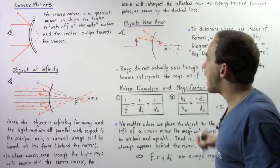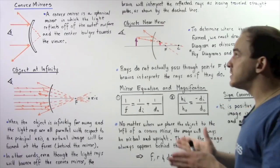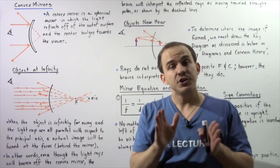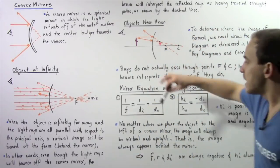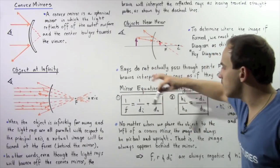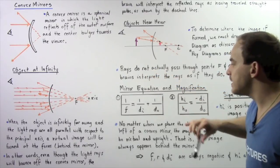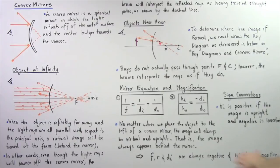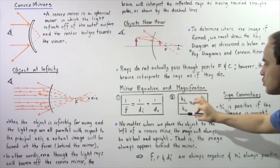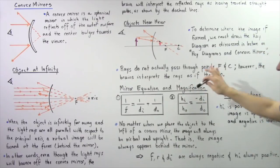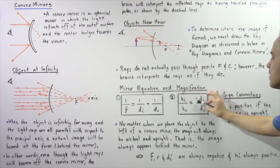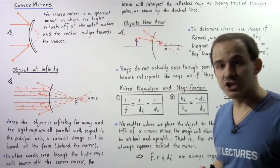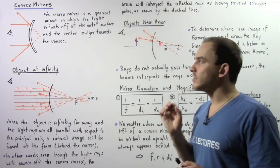Just as we derived the mirror equation and lateral magnification for concave mirrors, we can use those same equations for convex mirrors. The mirror equation is: 1/F = 1/DI + 1/DO, where F is the focal length, DI is the image distance, and DO is the object distance. The magnification equation is: HI/HO = −DI/DO, where HI is the image height and HO is the object height. When dealing with convex mirrors, it is important to know the sign convention — when do we use a negative and when do we use a positive?